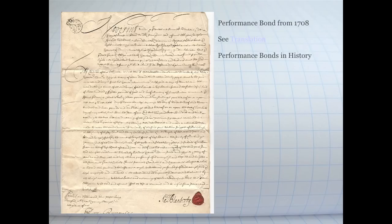The slide right now shows a performance bond from 1708. It's a lot different than performance bonds today because historically, performance bonds were often about performance on an actual position that somebody held. This particular one is a barrister's bond. The translation is online — you can get it by clicking the link on our slide — but even the translator wasn't really 100% sure what it meant.